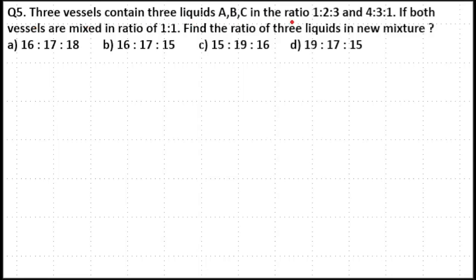Three vessels contain three liquids A, B, C in the ratio 1 is to 2 is to 3 and 4 is to 3 is to 1. If both vessels are mixed in a ratio 1 is to 1, find the ratio of three liquids in new mixture.